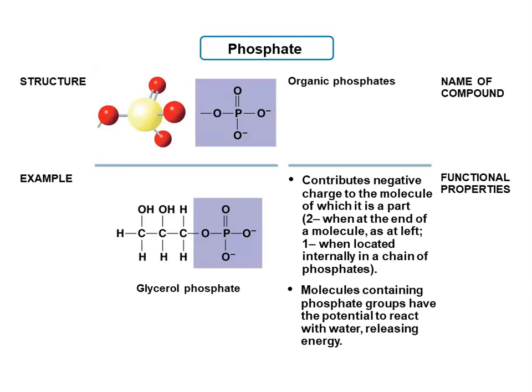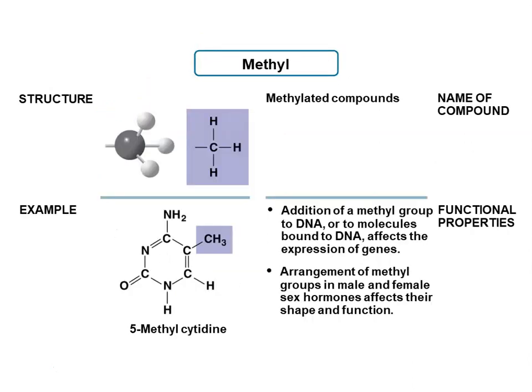Phosphate groups are part of our nucleic acids, and we're also going to talk about them in the form of ATP. You have that phosphorus with four oxygens attached to it. Because it is a negatively charged molecule, it is able to react with water and release energy. Methyl groups are carbons attached to hydrogen atoms. We see these attached to DNA, which can impact whether genes are able to go through transcription and translation. Methyl groups also affect female and male sex hormones — when a methyl group is attached, it can impact the hormone's shape and function.